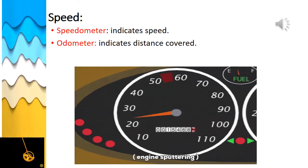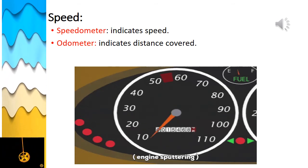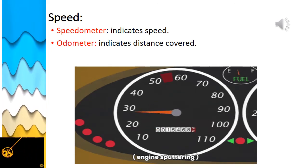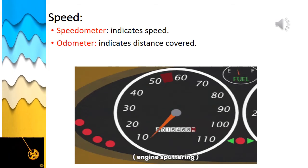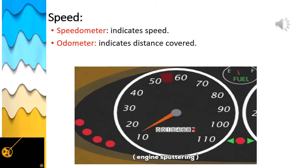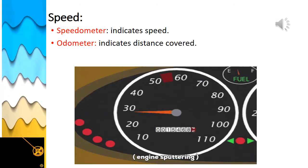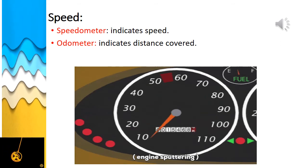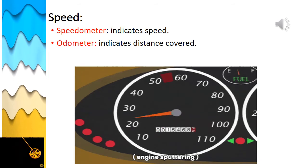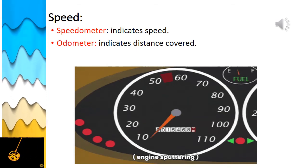When you look at the dashboard of a car, you find many instruments on it. A speedometer is an instrument on a vehicle's dashboard which indicates the speed of the vehicle at that instant in kilometers per hour. An odometer is an instrument which shows the total distance covered by the vehicle in kilometers. Meters fitted on scooters and motorcycles have inbuilt speedometers and odometers.